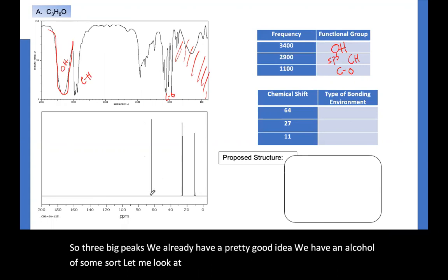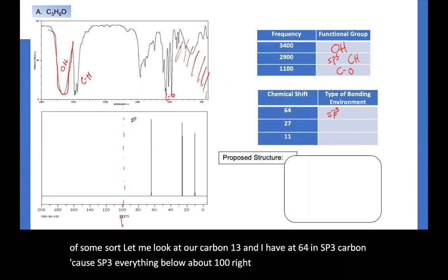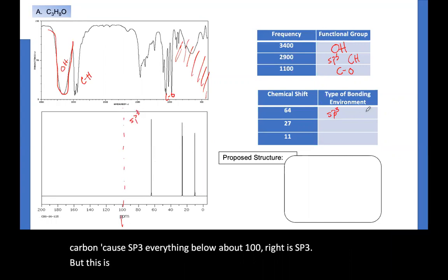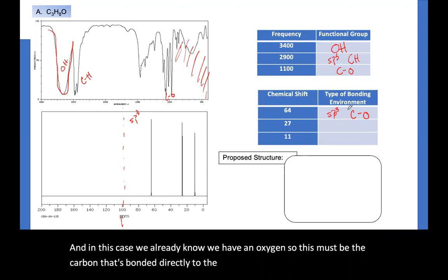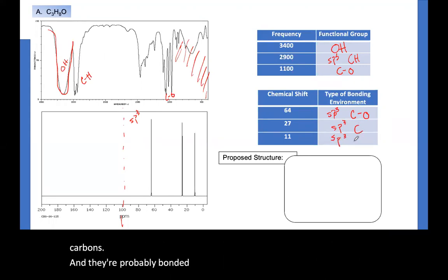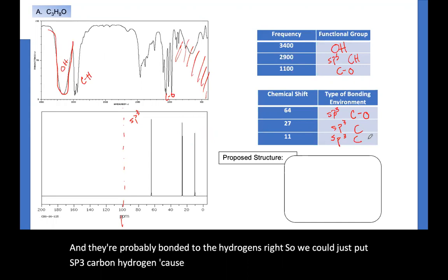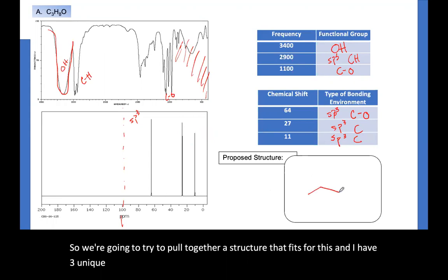So three big peaks. We already have a pretty good idea. We have an alcohol of some sort. Let me look at our carbon-13, and I have at 64 an SP3 carbon, because everything below about 100 is SP3. But this is all the way at 64, so it's probably next to a hetero atom, something electronegative. And in this case, we already know we have an oxygen. So this must be the carbon that's bonded directly to the oxygen. Then we have two other SP3 carbons. And they're probably bonded to the hydrogens. So we could just put SP3 carbon hydrogen, because we don't know how many hydrogens.